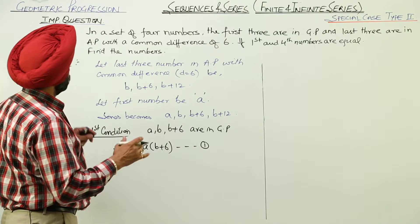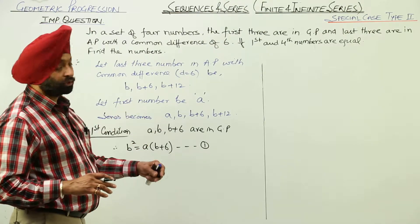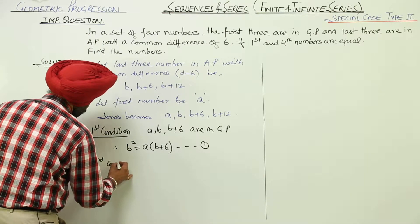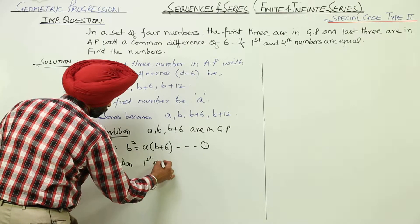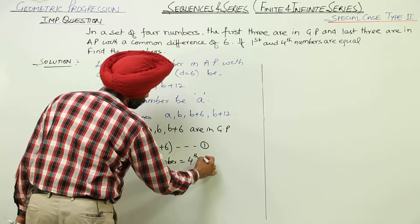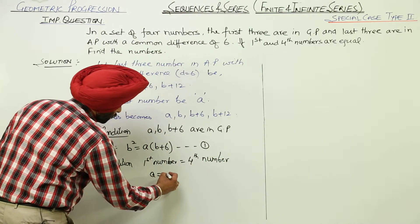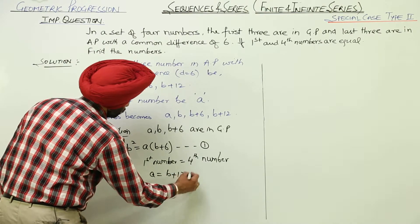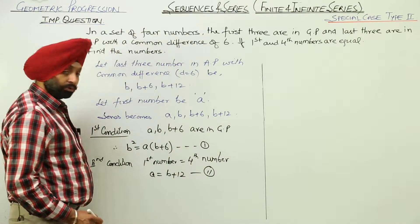Then, last 3 are already in AP and also 1st and 4th numbers are equal. Now, second condition. First number is equal to 4th number. This is the second condition. So, first number we are having A and last number is B plus 12. And let this be 2.